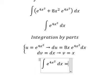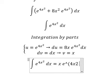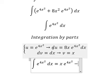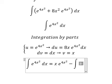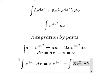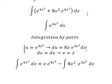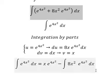So we have u multiplied by v minus the integral of u times v. So we have the integration 8x² e^(4x²) dx. Now we need to go back in here.